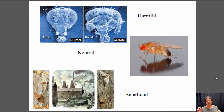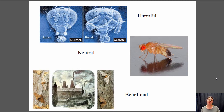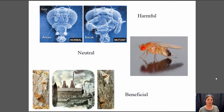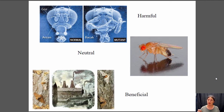And very, very rarely, you can get mutations that are actually beneficial. One example often given is a mutation in moth populations that makes them darker, which could be beneficial if it allows them to blend into polluted trees better. So most of the time mutations either do nothing or they're bad; very, very rarely they can be beneficial.